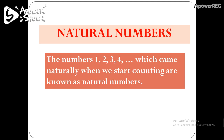Natural numbers are those numbers which we generally use for our counting purposes. So whenever you have to count something, you always start from 1. These numbers came naturally, that is why mathematicians call them natural numbers.